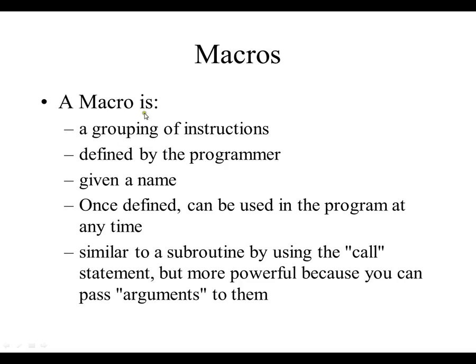So how can we make programming in assembly easier? And the answer to that is, one answer to that is using macros. What is a macro? A macro is a grouping of instructions to define by the programmer, given a name. Once defined can be used in the program at any time. It's similar to a subroutine. By using the call statement is how you do subroutines, but it's more powerful because you can pass arguments to them. And we'll look and see what we mean by the word arguments.